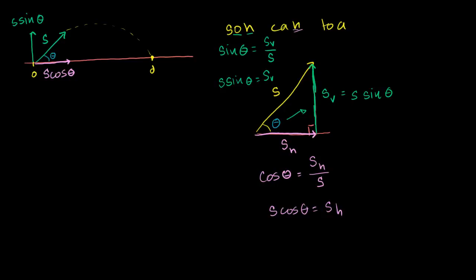Let's figure out how long this object is going to be in the air, given that its vertical velocity — or the magnitude of the vertical velocity — is s sine of theta. So its speed in the vertical direction is s sine of theta.